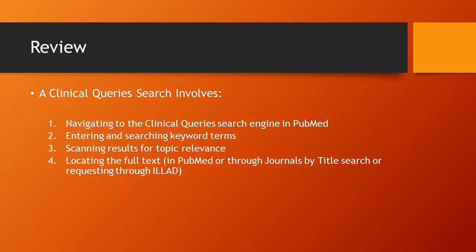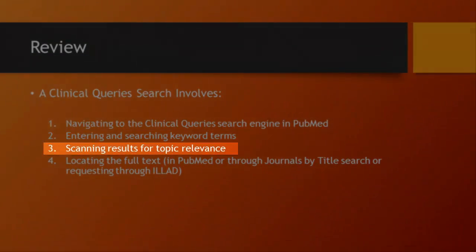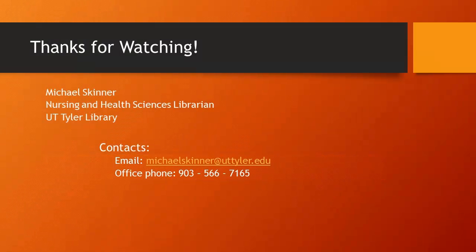In this tutorial, we have reviewed the procedure for finding evidence-based research using PubMed Clinical Queries. A Clinical Queries search involves navigating to the Clinical Queries search engine in PubMed, entering and searching keyword terms, scanning results for topic relevance and study design, and locating the full text either in PubMed, through journals by title search, or requesting through ILLiad Interlibrary Loan. If you have questions, please contact me at michaelskinner@uttadler.edu or by phone at 903-566-7165.